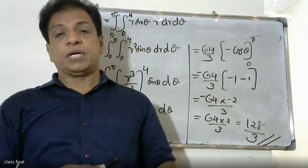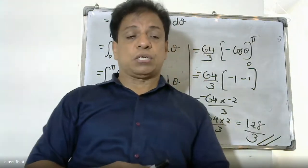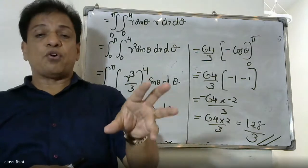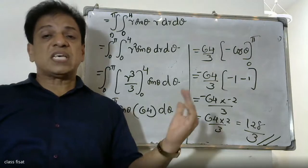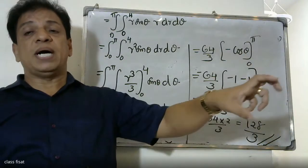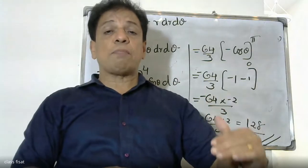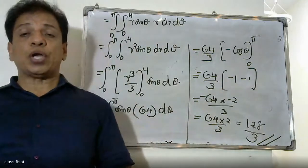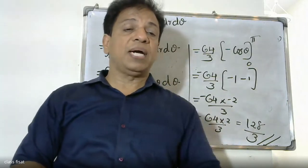We computed ∂f/∂y and ∂g/∂x, substituted into the formula, and converted to polar coordinates. The region is the upper semicircle with x² + y² = 16, radius = 4, so r ranges from 0 to 4 and θ ranges from 0 to π. The final answer is 128/3.